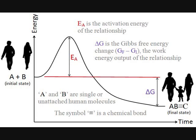Delta G is the symbol for Gibbs free energy change, which is the difference between the free energy of the state of the family at the final state and the free energy of the unattached pair at the initial state, which signifies the work energy released from the relationship over time.